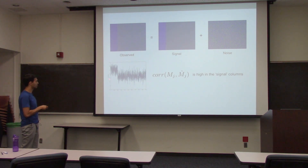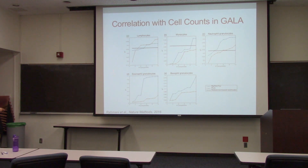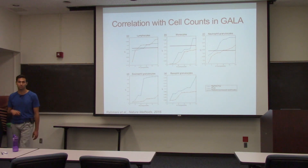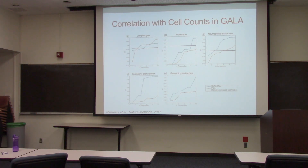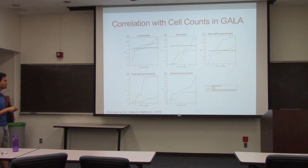Simulated data shows the score is expected to be higher for signal sites. We validated using the GALA data from Esteban Burchard's group at UCSF. Most datasets don't have cell counts, but in this case we had cell counts for some individuals. For each cell type — shown in each subplot — for any number of components on the x-axis, you can see that more correlation with cell counts is explained using the ReFACTor PCs compared with the PCs of standard PCA.